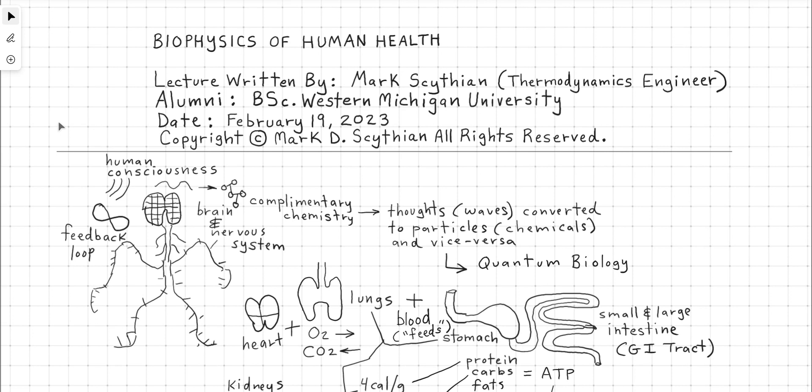We can get started here focusing first on human consciousness, which is the electrical or the light body interface with the physical body. This is where conscious human thought projects signals to the brain. The brain is the chemist of the human body, which then takes the waveforms and converts them into chemical compounds. This is known as complementary chemistry and obeys a quantum biology model, which is based on the thoughts or waves converted into particles, chemicals, and vice versa.